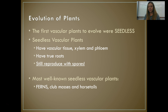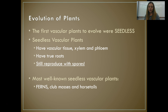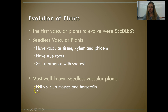Our first vascular plants to evolve were seedless vascular plants. They have vascular tissues so they can grow a little bigger and move materials faster, but they haven't yet evolved seeds. They have true roots, but they still reproduce with spores. Our most well-known seedless vascular plants are ferns, but there are also club mosses and horsetails.